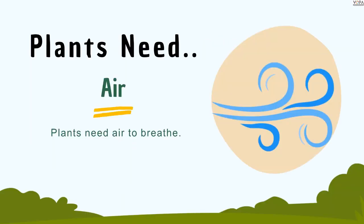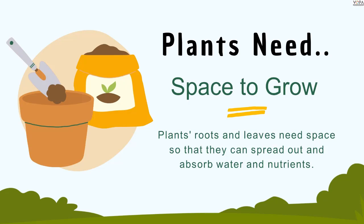Now the third one — plants need air. Why do plants need air? Plants need air to breathe. Now moving towards another one: plants need space to grow. That means plants' roots and leaves need space so that they can spread out and absorb water and nutrients.